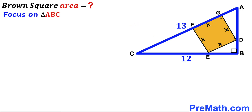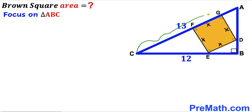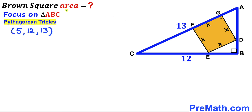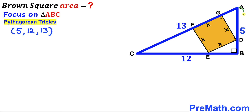Now let's focus on right triangle ABC. We know its hypotenuse is 13 units and one of its legs is 12 units. We need to calculate leg AB as well. Recalling the Pythagorean triplet 5, 12, and 13, since our two known values are 12 and 13, this unknown leg AB must be 5 units.